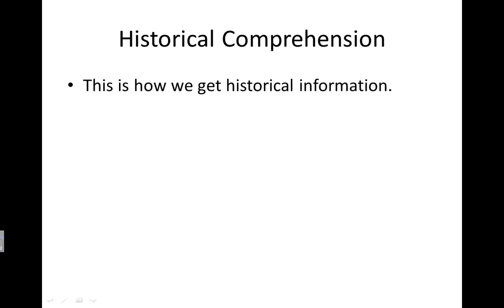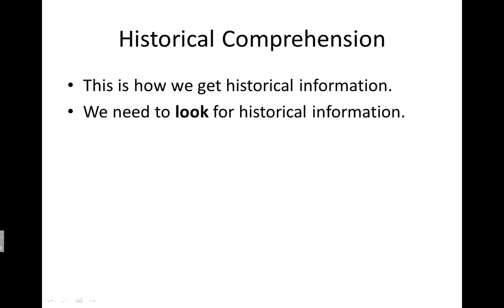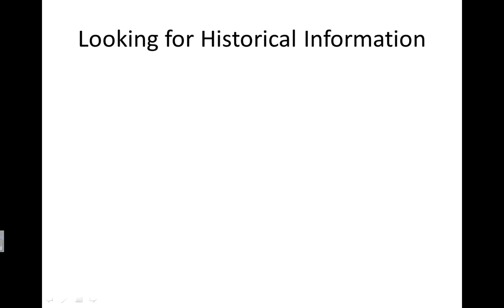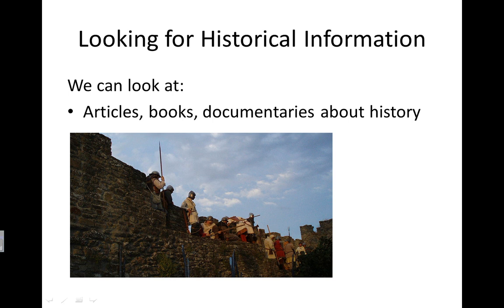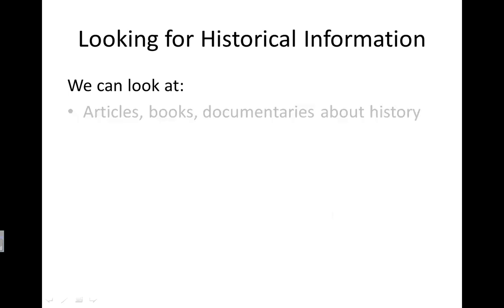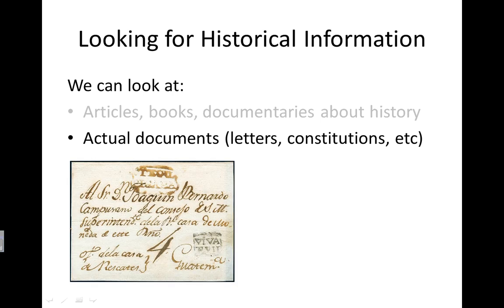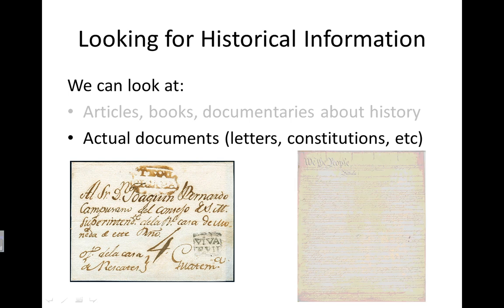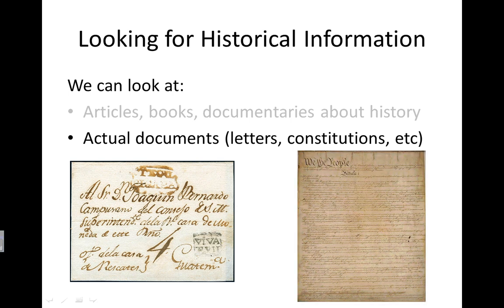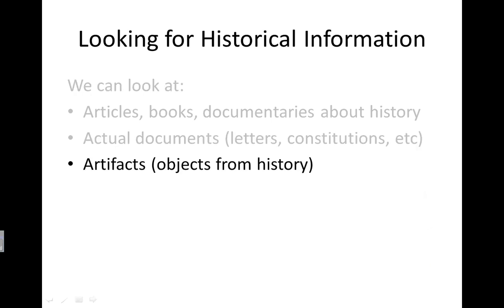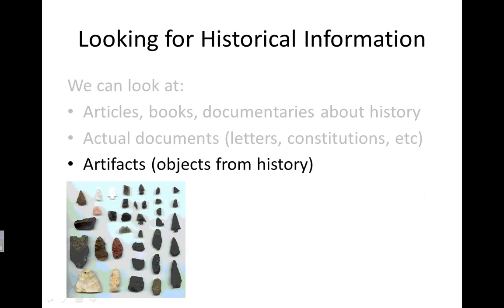Historical comprehension is how we get historical information, and we need to look for it as historians. We can look at articles, books, or documentaries about history — for example, a documentary about medieval times. We can also look at actual documents, like old letters delivered during the historical time we're studying, or constitutions and other documents written during that time period. We can also look at artifacts, different objects that were found, to try and answer some of our questions.